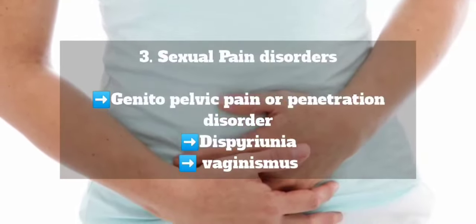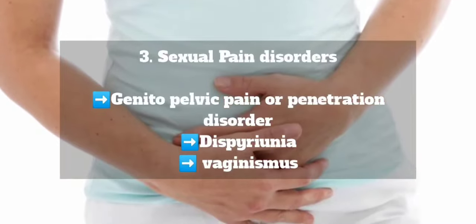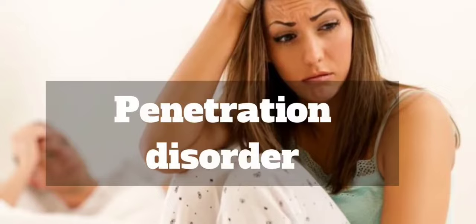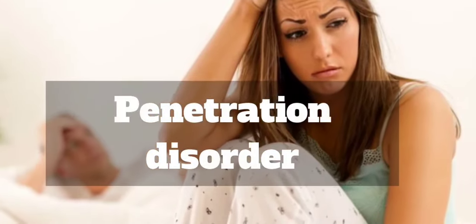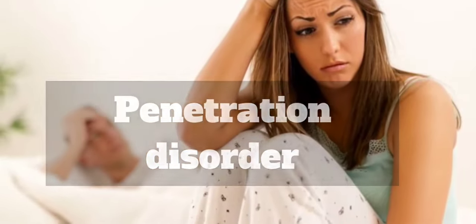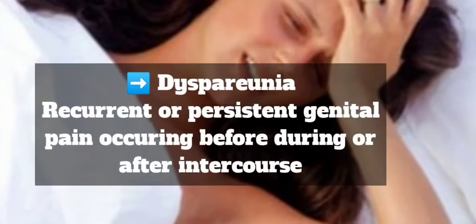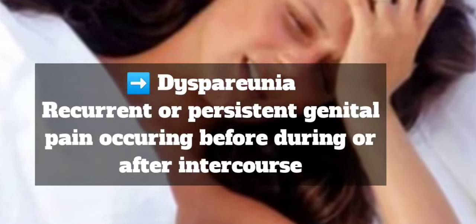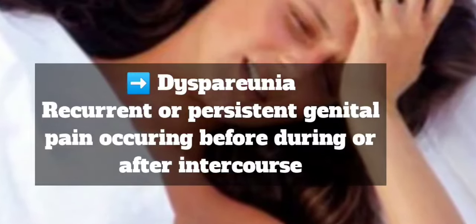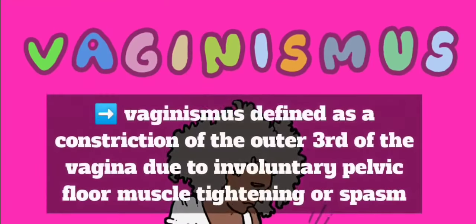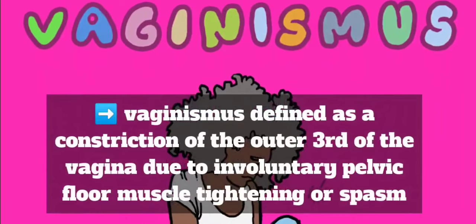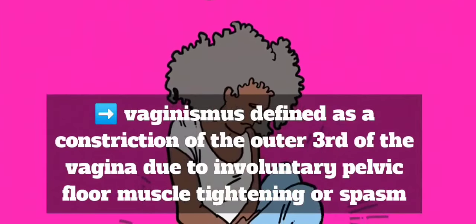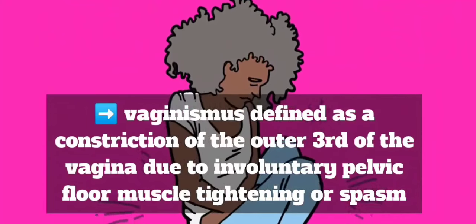The third category of sexual dysfunction is sexual pain disorder. It includes genitopelvic pain or penetration disorder, known as dyspareunia, which is the recurrent persistent genital pain occurring before, during, or after intercourse. Vaginismus is defined as a constriction of the outer third of the vagina due to involuntary pelvic floor muscle tightening or spasm.